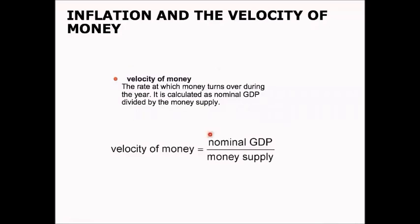That's the rate at which money turns over during a year. And so we can calculate that by looking at nominal GDP, which is the total dollar value of transactions that take place in our economy, divided by the money supply. So if nominal GDP was $15 trillion and the money supply was $3 trillion, then the velocity of money would be equal to 5. On average, each dollar would turn over in the economy five times per year.